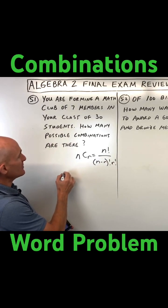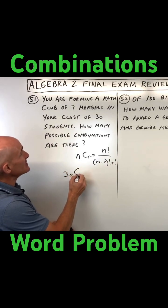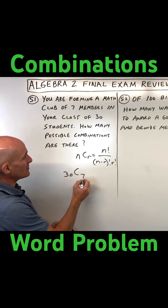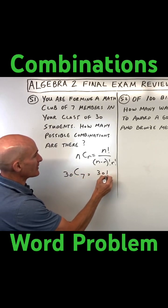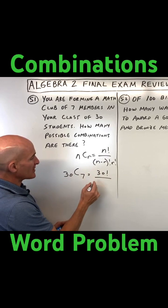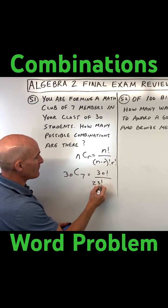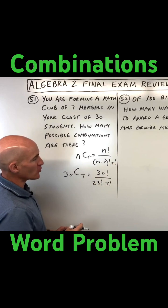So in this case, what we have is going to be 30C7, which is 30 factorial over 30 minus 7, which is 23 factorial times R factorial, which is 7 factorial.